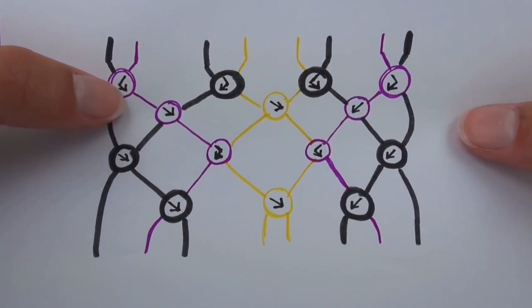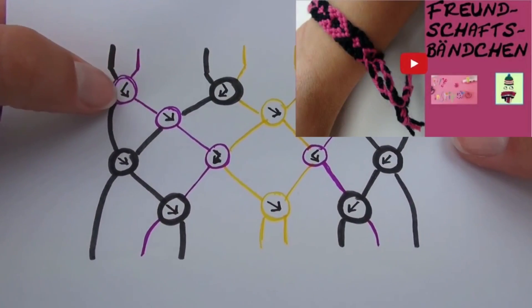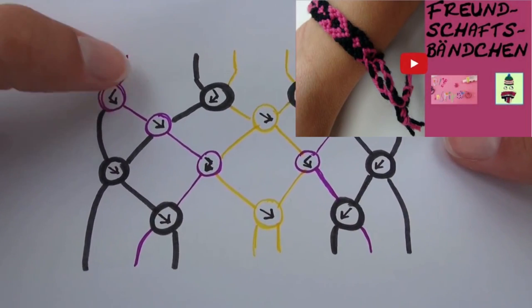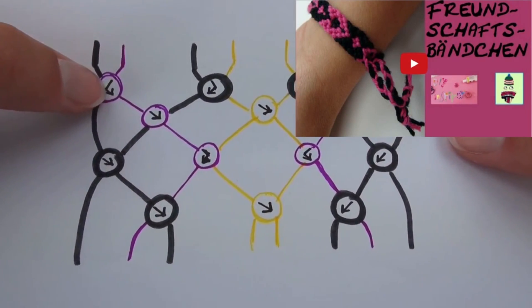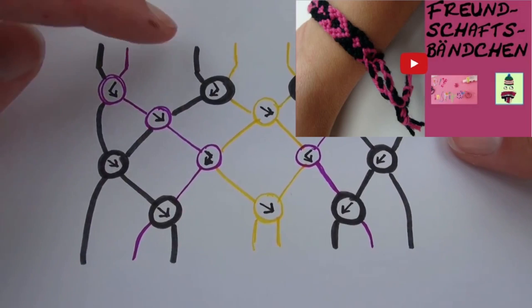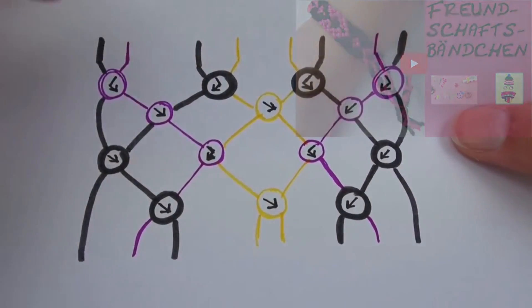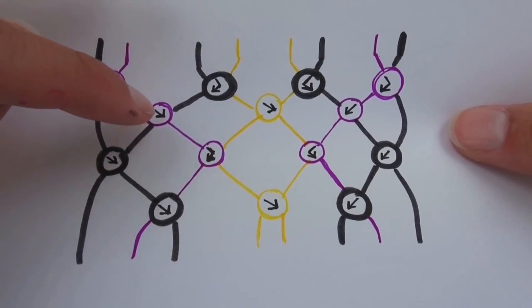As you can see, we work with colors and we work with the arrows. The arrows are for which way to make your knot.